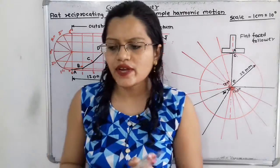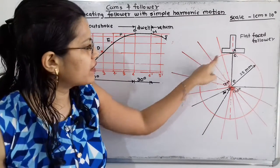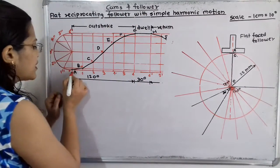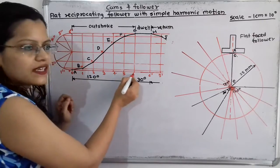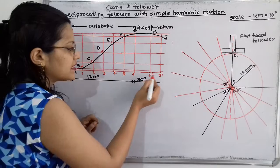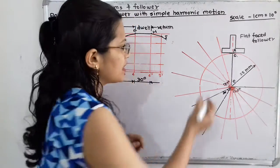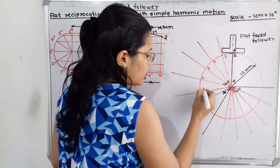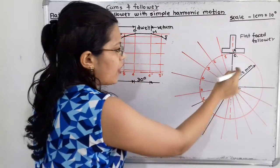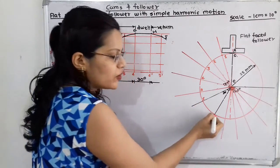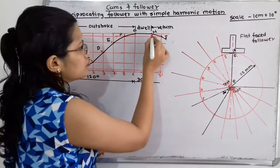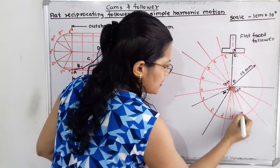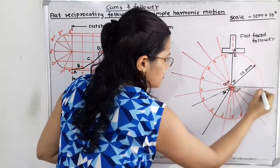Now we have to give the numbers on the base circle. As in the displacement diagram, numbers are in sequence: 0, 1, 2, 3, 4, 5, 6, then the dwell period, then 6 dash, 5 dash, 4 dash, and so on. So I will give here the numbers: 1, 2, 3, 4, 5, and 6 — outstroke getting completed. Then for dwell period no number. When return stroke starts, the first number is 6 dash, then 5 dash, 4 dash, 3 dash, 2 dash, 1 dash, and 0 dash.